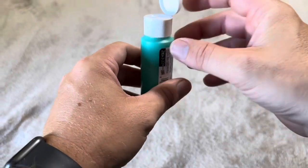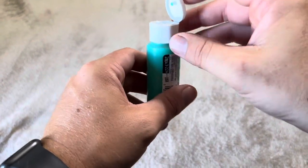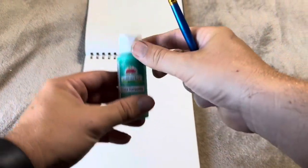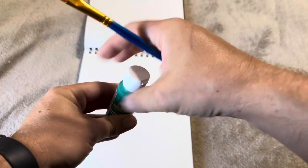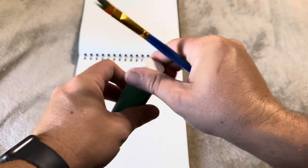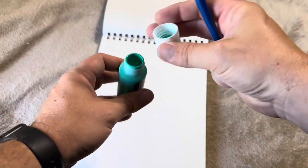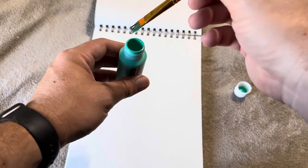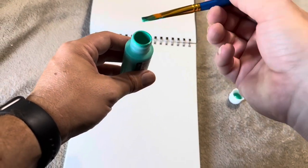So now let me grab some paper and show you exactly what this paint looks like. I've got a sketchbook here and I'm going to use this paint straight out of the bottle. Typically I would squirt it onto a palette or something like that, but for this demonstration I'm just going to get it right out of the bottle and dip it right inside.